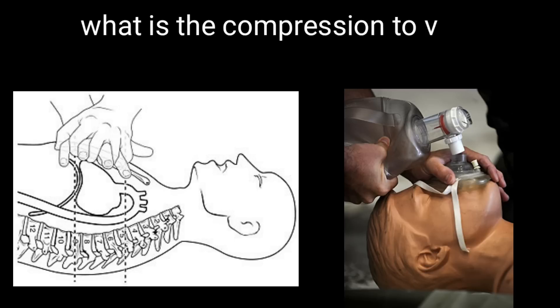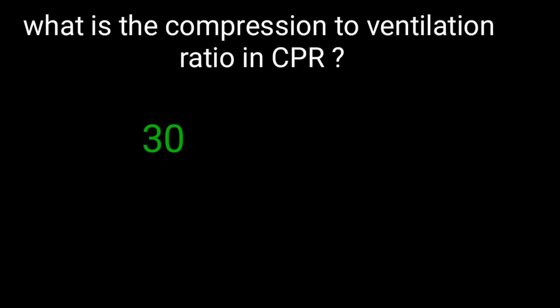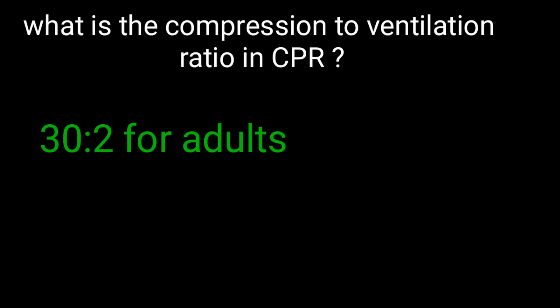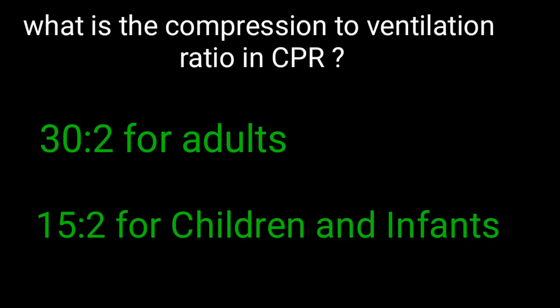What is the compression to ventilation ratio in CPR? 30 to 2 for adults. 15 to 2 for children and infants.